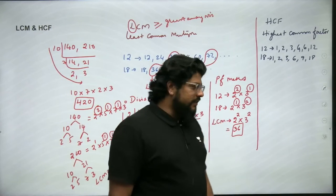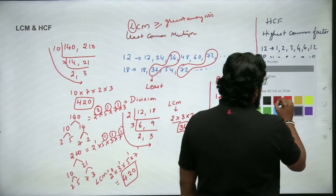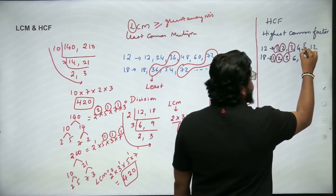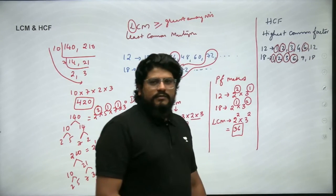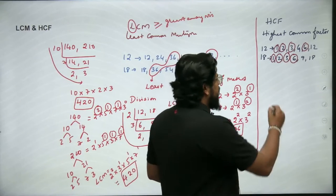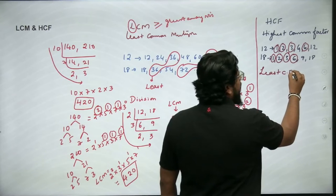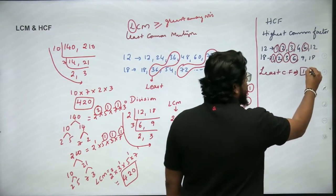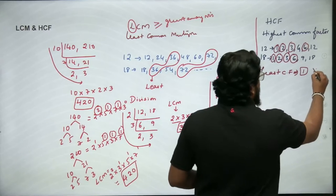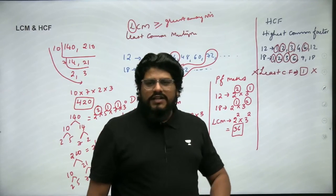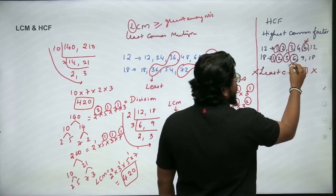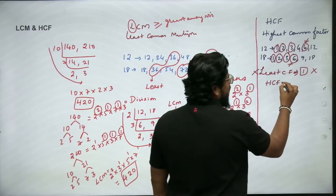To find HCF, we look for common factors between 12 and 18. The common factors are 1, 2, 3, and 6. Now, the least common factor between any two numbers is always 1, because 1 is a factor of every number. That's why nobody asks for the least common factor — instead, we ask for the highest common factor, which here is 6. So HCF of 12 and 18 is 6.